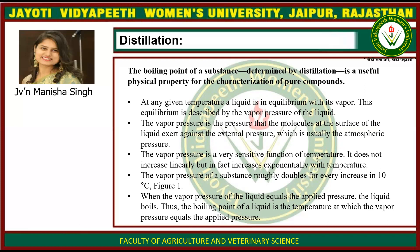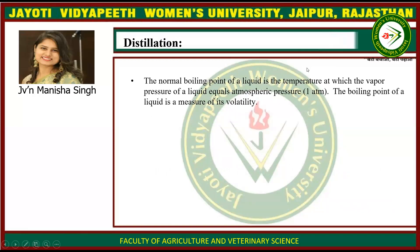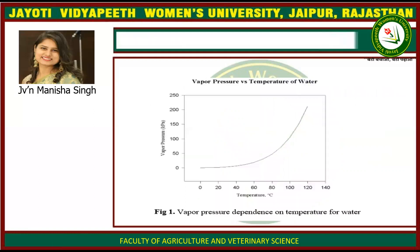When the vapor pressure of the liquid equals the applied pressure, the liquid boils. The boiling point of a liquid is the temperature at which the vapor pressure equals the applied pressure. The normal boiling point of a liquid is the temperature at which the vapor pressure equals atmospheric pressure. The boiling point of a liquid is a measure of its volatility. This is the figure diagram showing the vapor pressure and temperature relationship.